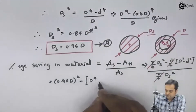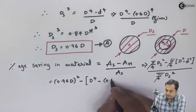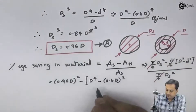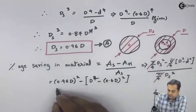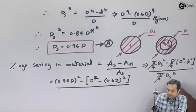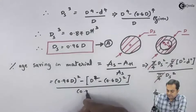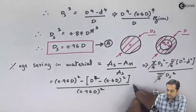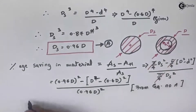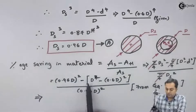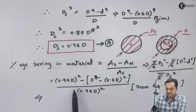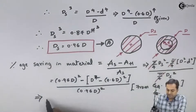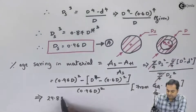Substituting values: numerator becomes (0.96D)² − [D² − (0.6D)²], denominator is (0.96D)². Since D² appears throughout, it cancels out, leaving only numerical values. Simplifying this expression gives the answer as 29.83 percent.